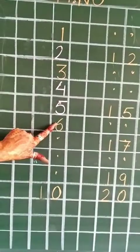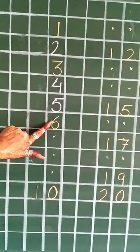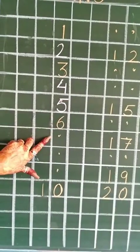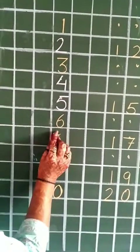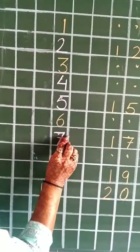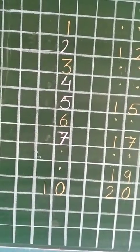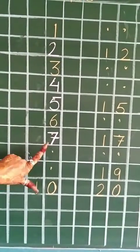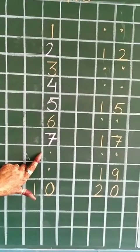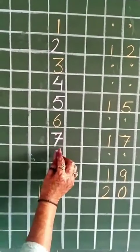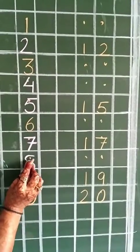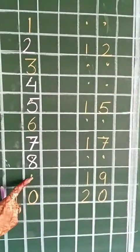In the next box, six is written, so we don't have to write anything. Six ke baad? Seven, very good. So we will write seven in this box. Again the next box is empty. What comes after seven? Seven ke baad kya aata hai? Eight. So we will write number eight.